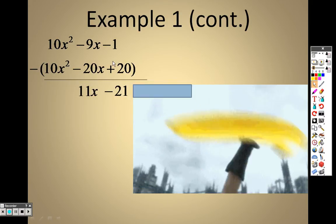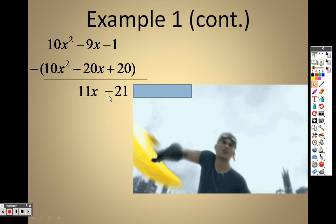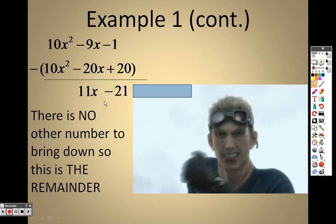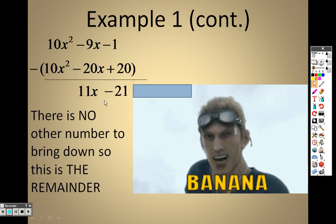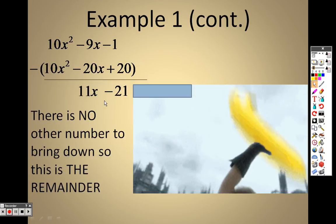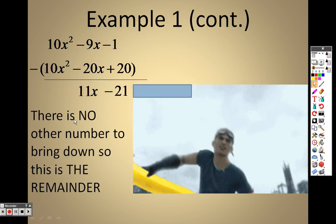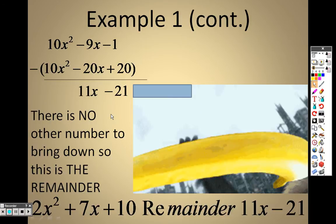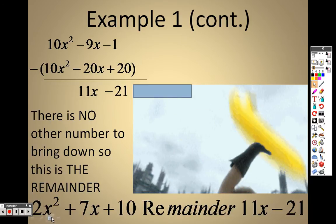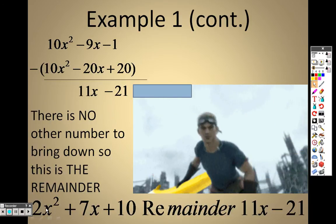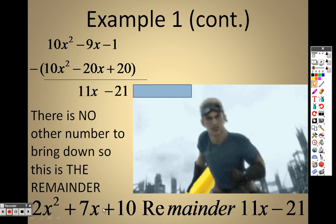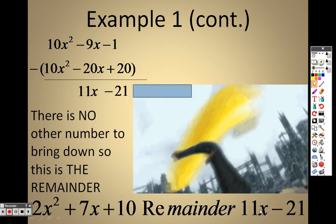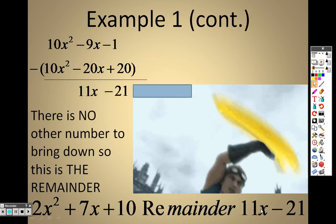x squared times what gives me 10x squared? Just 10 — so a positive 10. 10 times negative 2x is negative 20x; 10 times 2 is 20. When I subtract, crossing out gives positive 20, so negative 9x plus 20x is 11x, and that becomes negative 21. There are no more terms to bring down, so this is the remainder. The answer is 2x squared plus 7x plus 10, with a remainder of 11x minus 21.